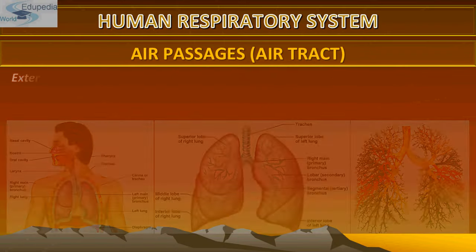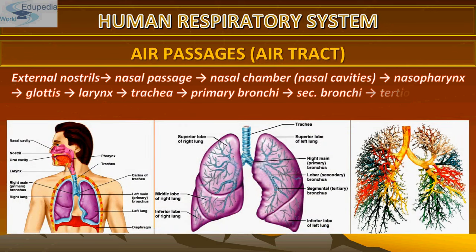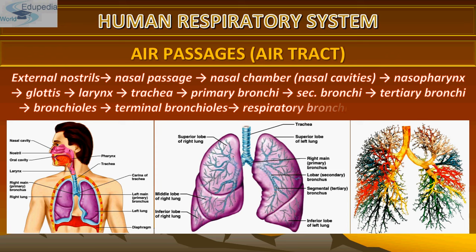The complete air tract pathway is: external nostril → nasal passage → nasal chamber → nasopharynx → glottis → larynx → trachea → primary bronchi → secondary bronchi → tertiary bronchi → bronchioles → terminal bronchioles → respiratory bronchioles → alveolar duct → alveoli. Each terminal bronchiole gives rise to many thin and vascularized alveoli.